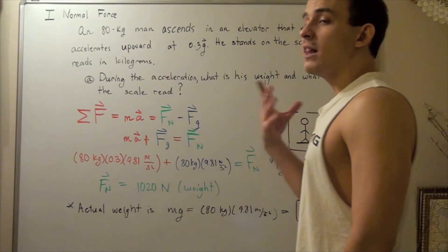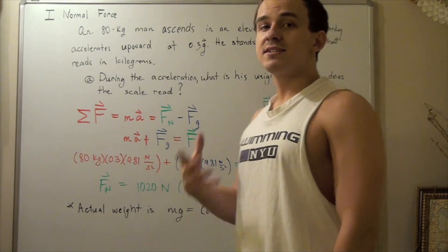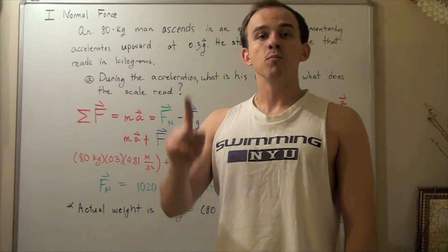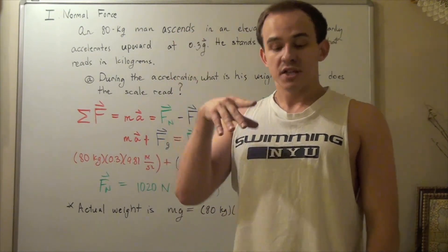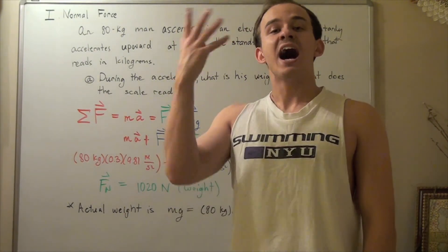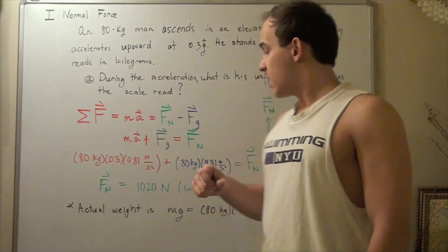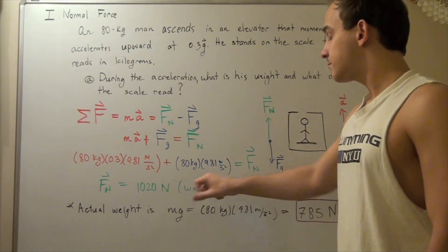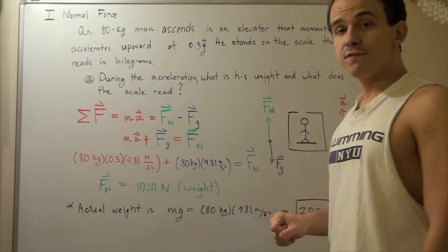So whenever an elevator is accelerating upward, the scale will read a higher force — a higher weight. In this case, 1,020 newtons versus the actual weight of 785 newtons.